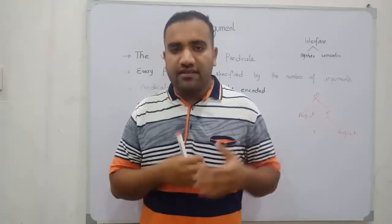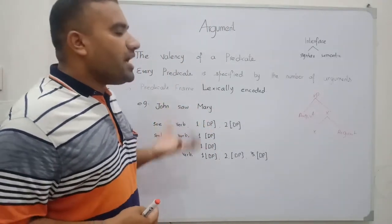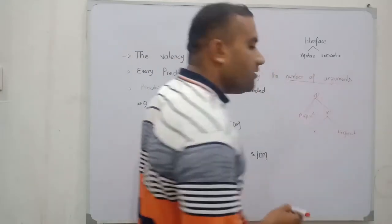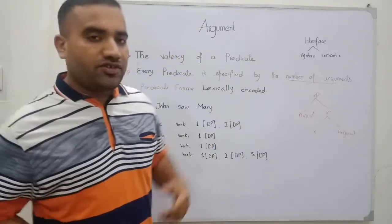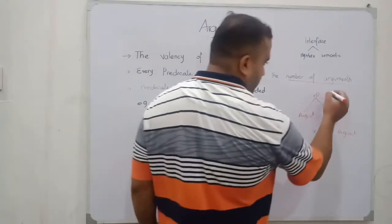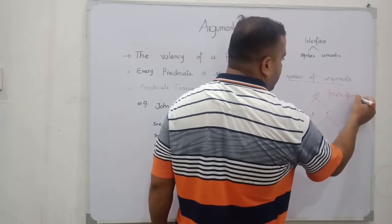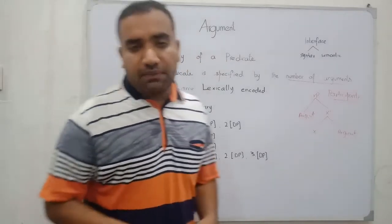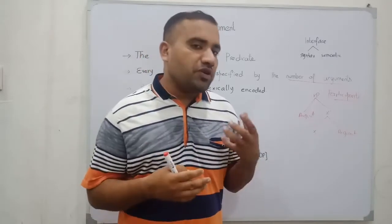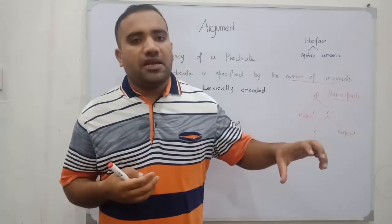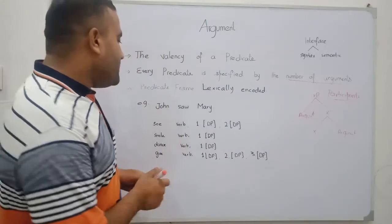Within the predicate frame — the lexical environment — we have a number of arguments. Arguments are the participants. Participants can be the agent, the theme, the instrument, the locative, the experiencer — whatever you can put within the predicate frame, they are the participants.